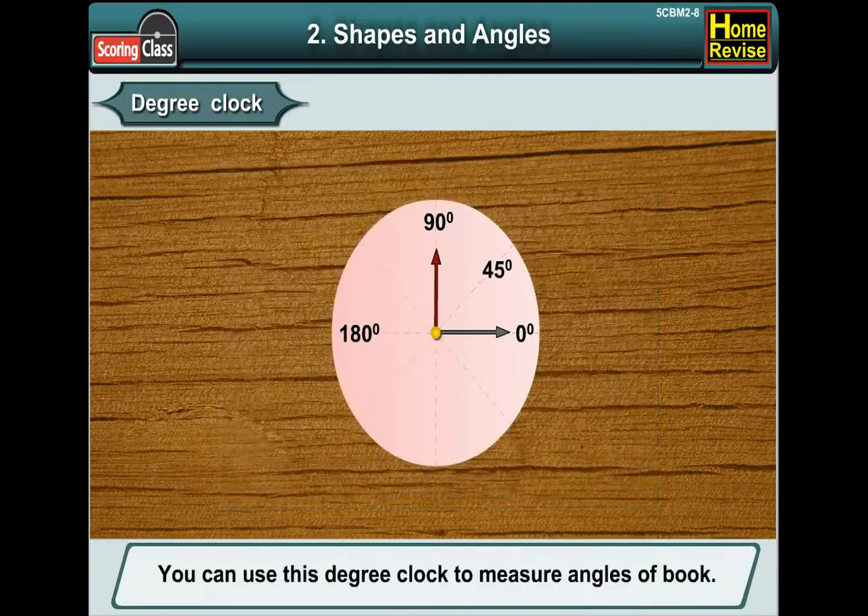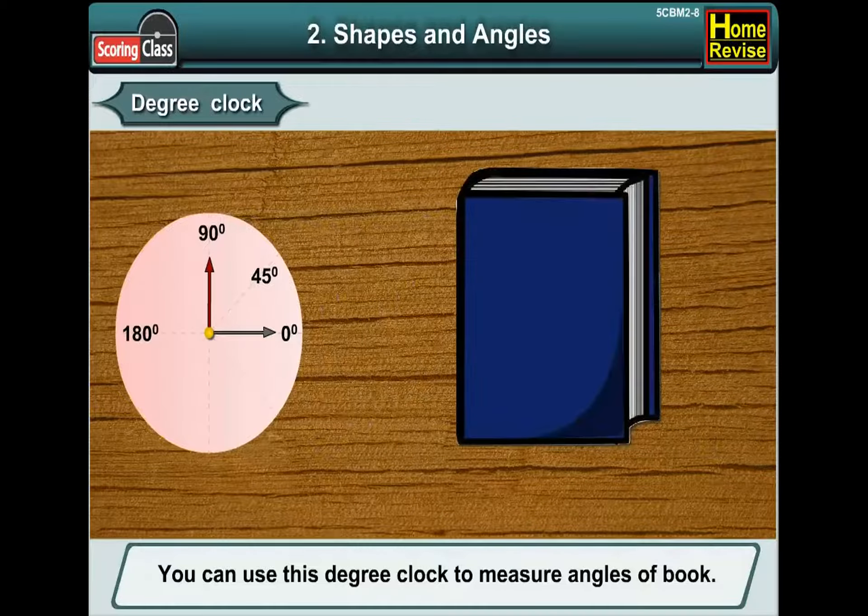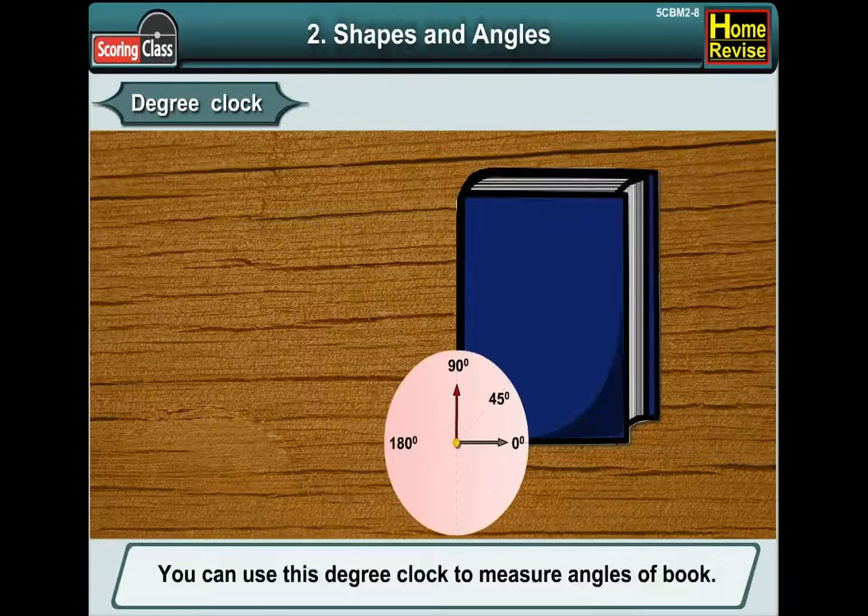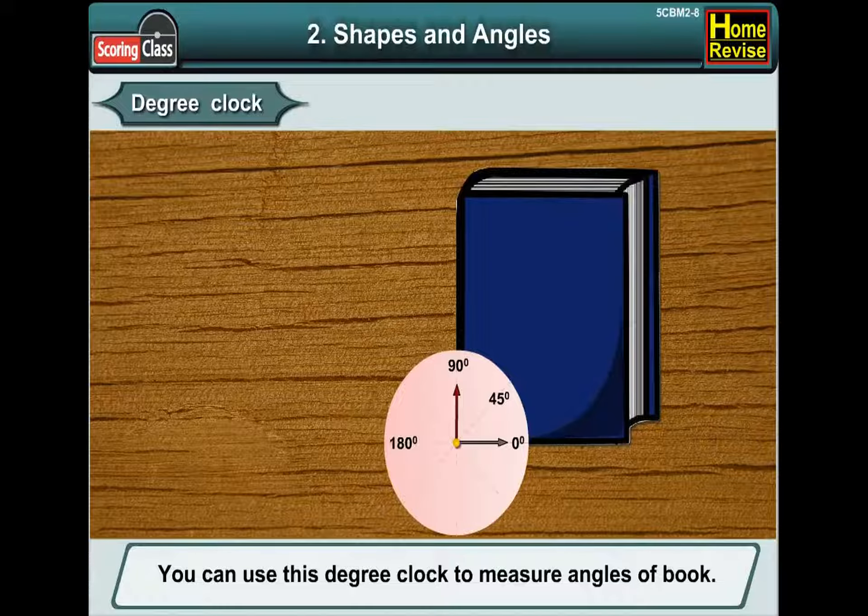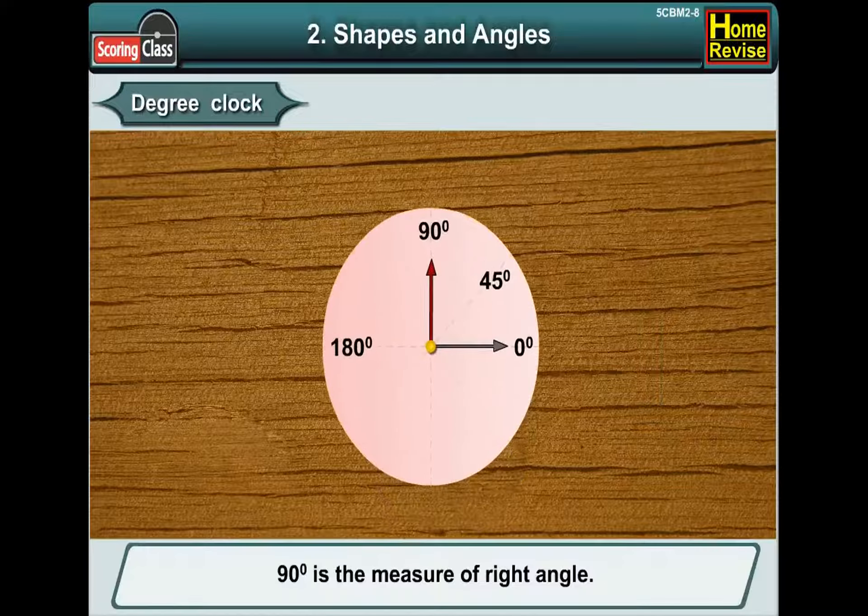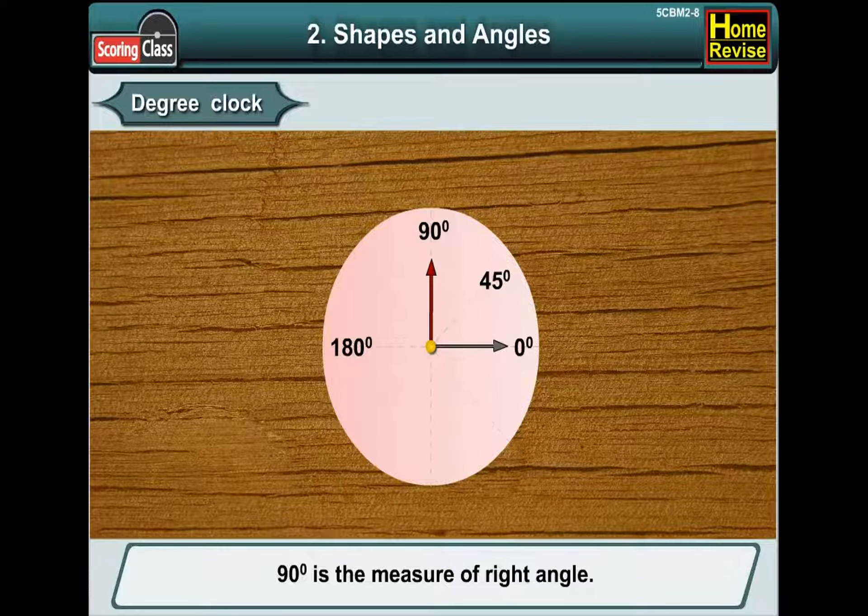You can use this degree clock to measure angles of book. Now, 90 degrees is the measure of right angle.